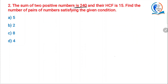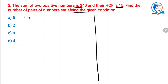Next question: the sum of two positive numbers is 240 and the HCF is 15. Find the number of pairs of numbers satisfying the given condition. So if HCF is given, then the pair of numbers can be written as 15A and 15B. I will tell you with an example, then we will solve this problem. Suppose HCF of two numbers is 6, then the numbers can be written in the form of 6A and 6B.